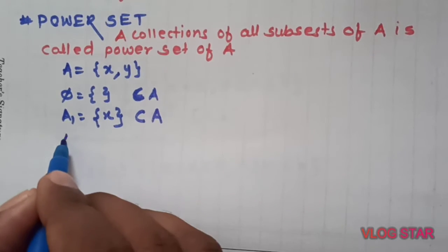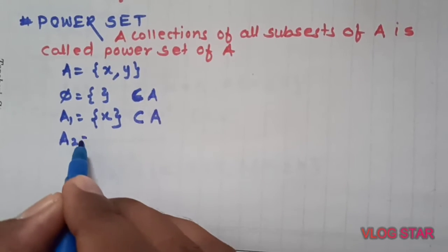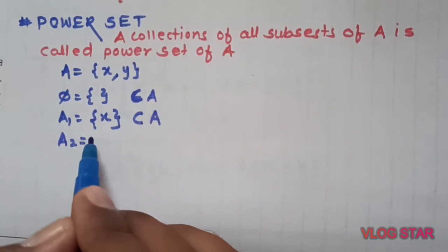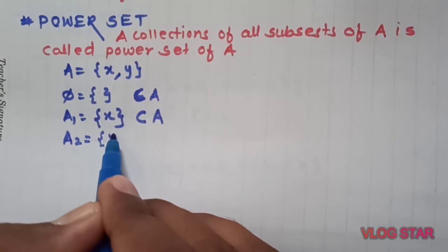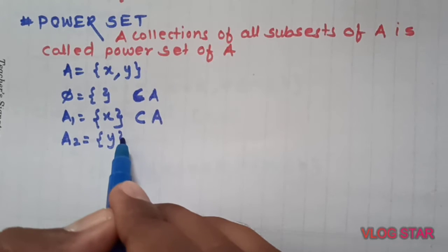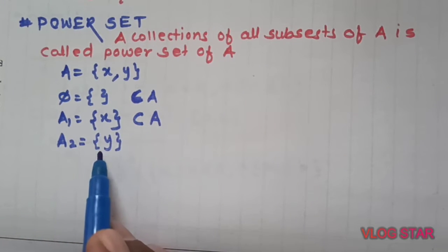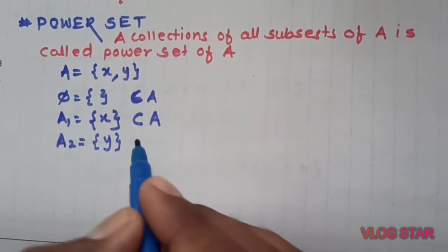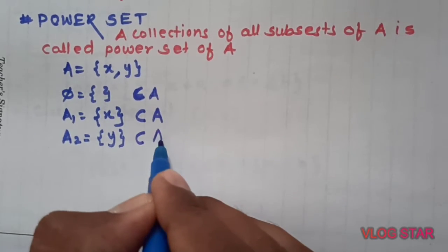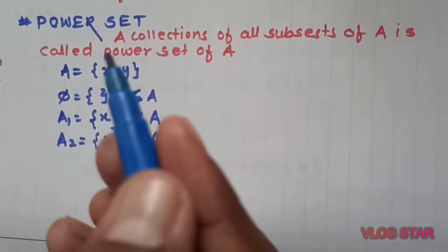Let's make subsets of A. A subset means that set should be a part of A. I will take one element, single element set. A1 contains single element x, so A1 is a subset of A.